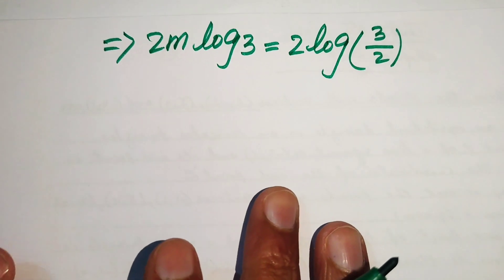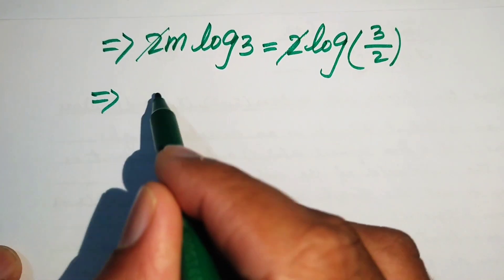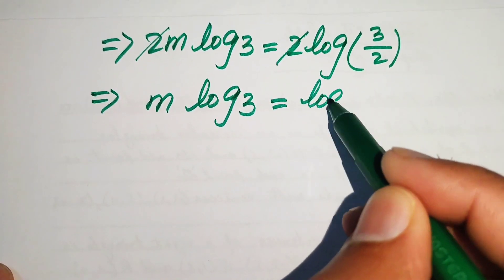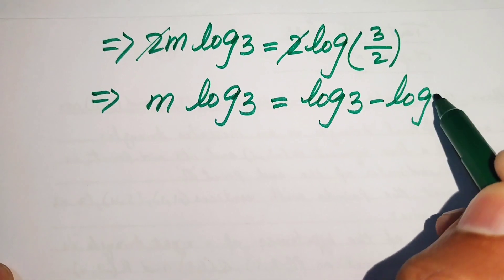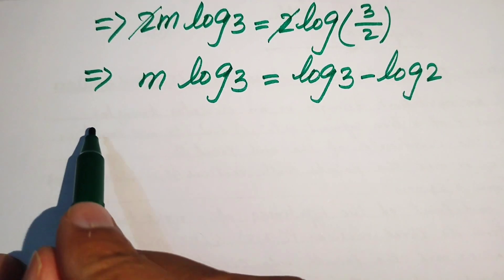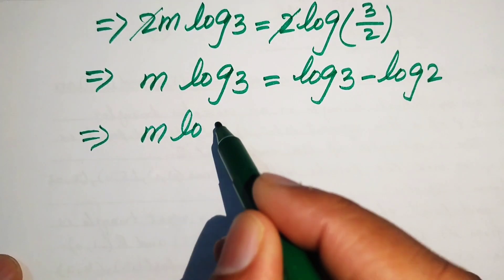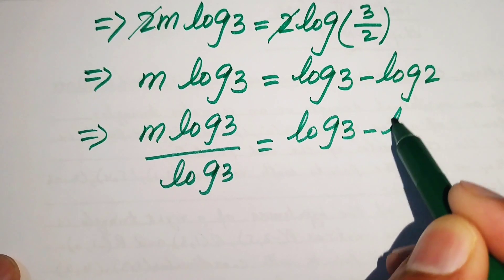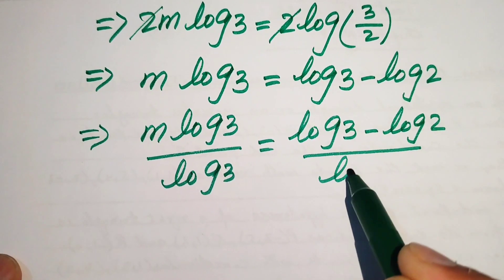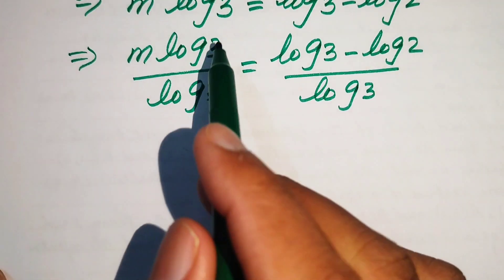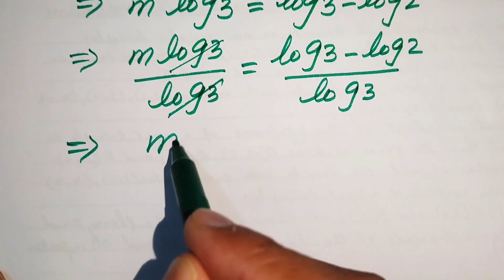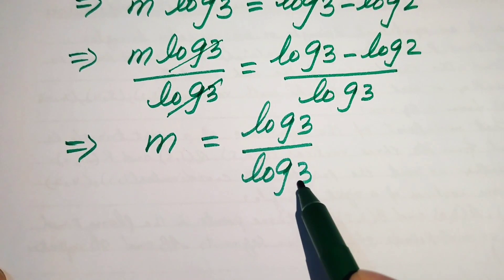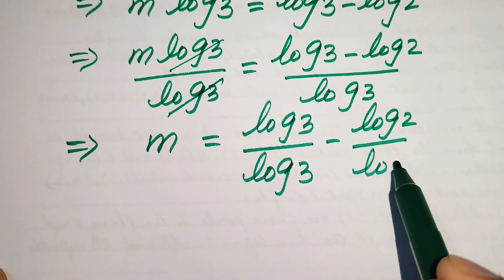On both sides the factor 2 cancels, giving m times log 3 equals log of 3 over 2. Using the quotient property of log, we write this as log 3 minus log 2. To eliminate log 3 from the left side we divide both sides by log 3, written as m times log 3 divided by log 3, equals log 3 minus log 2, divided by log 3.